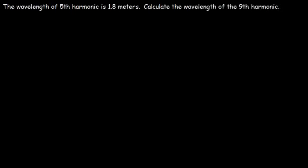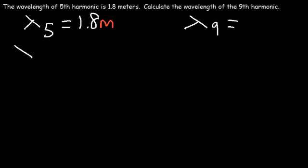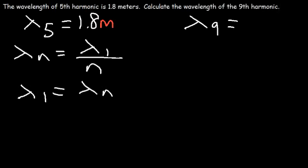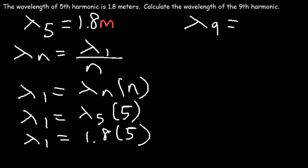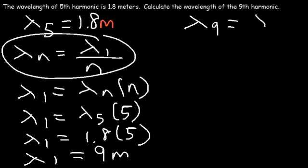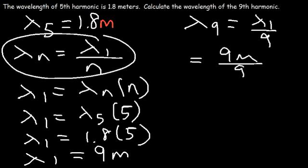The wavelength of the fifth harmonic is 1.8 meters. Calculate the wavelength of the ninth harmonic. We know lambda n equals lambda 1 divided by n, so lambda 1 equals lambda n times n. Therefore lambda 1 equals lambda 5 times 5, which is 1.8 times 5, giving us 9 meters. Now lambda 9 equals lambda 1 over 9, so that's 9 meters divided by 9, which is 1 meter.